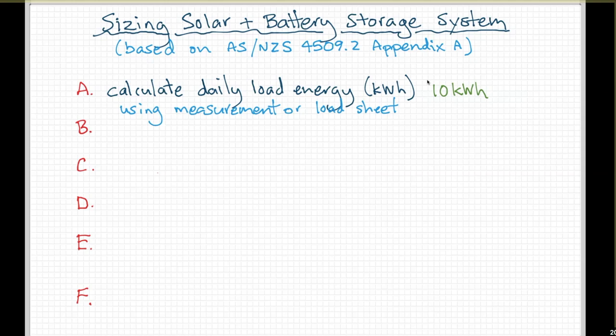Step one in a standalone power system design is to look at the energy resources available to the customer. Do they have a source of energy from wind, water, sun, wood, or other? I live in a cold, forested area — we use wood for our predominant source of heating, which takes a big load off our electrical system.